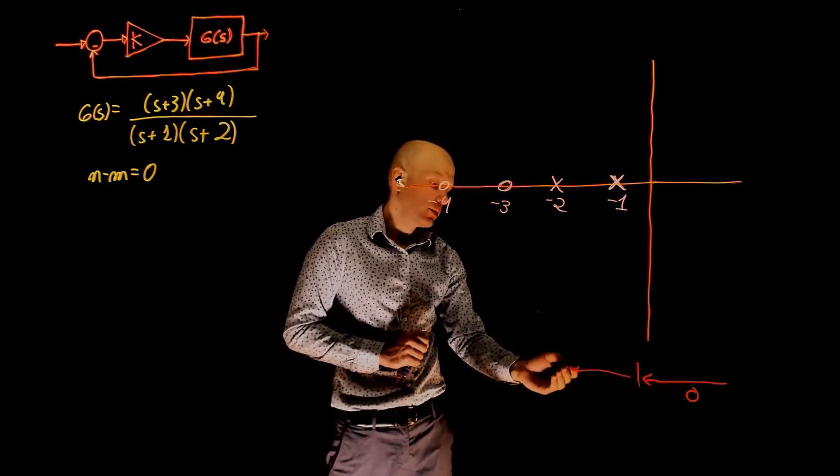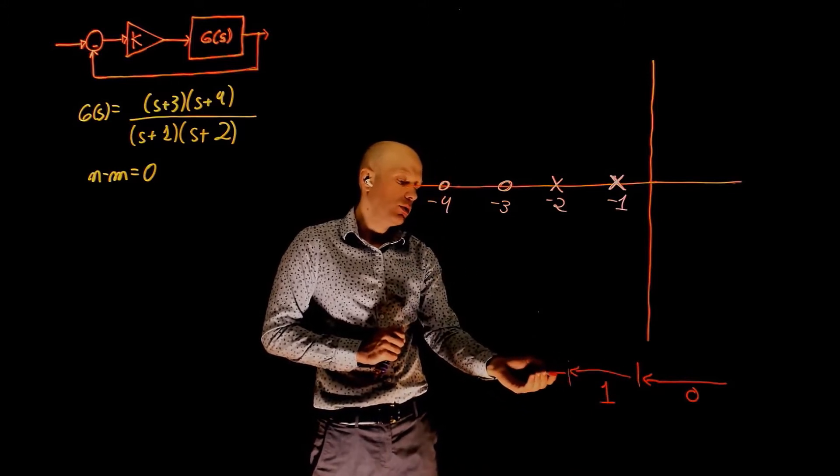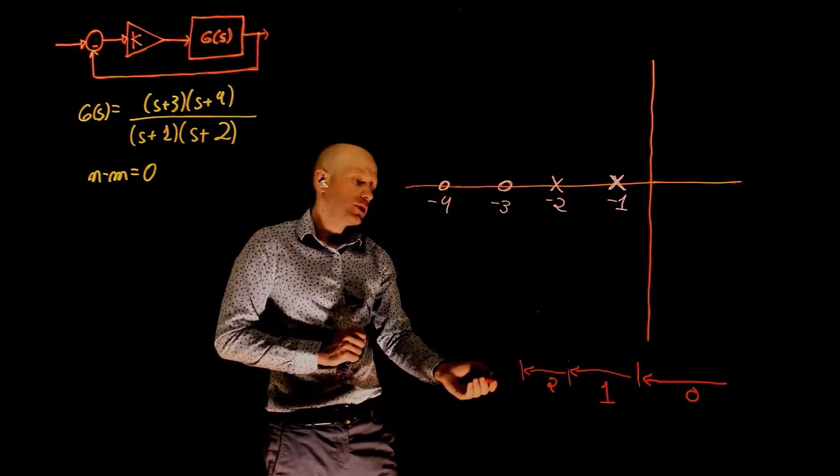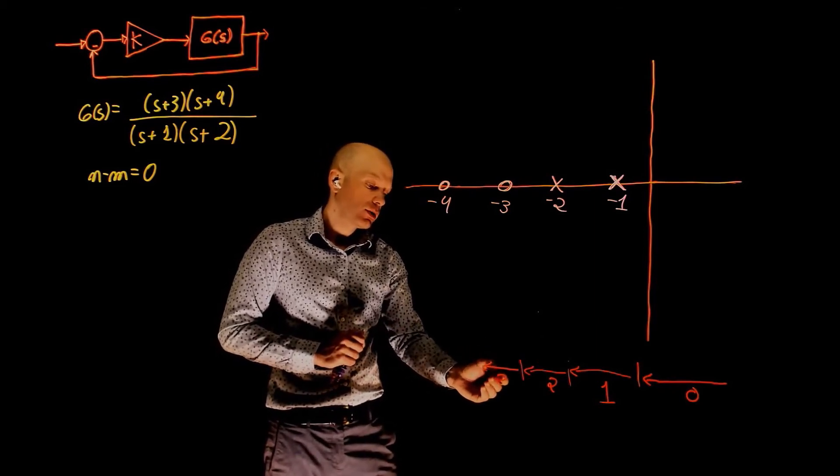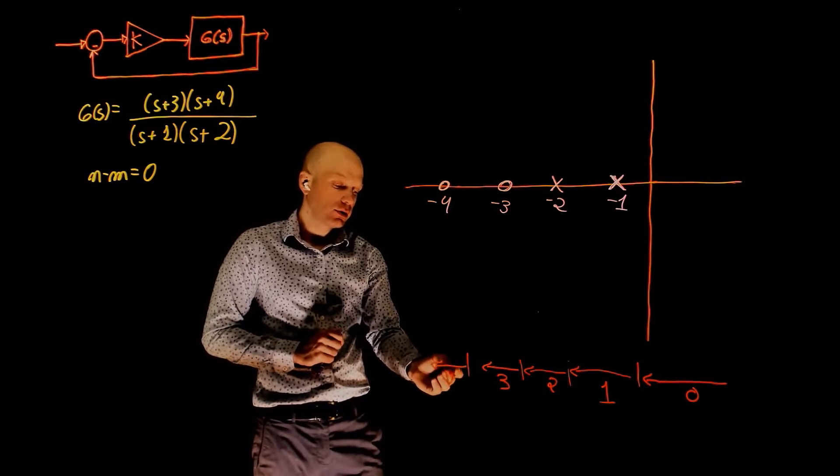Past negative 1 up to negative 2, the count is now 1, we encounter one pole. Here we encounter another pole, the count becomes 2. At negative 3 we encounter a zero, the count is now 3. And past negative 4, the count is 4.